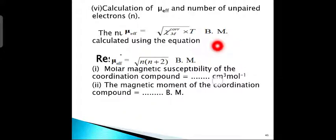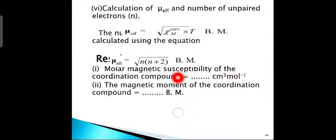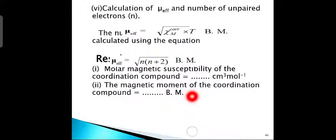Calculation of μ_eff and number of unpaired electrons N. The magnetic moment μ_eff is calculated using the equation: μ_eff = √(χ_M(corrected) × T) Bohr magnetons. The number of unpaired electrons is calculated using the formula: μ_eff = √(N(N + 2)) Bohr magnetons. The result gives the molar magnetic susceptibility of the coordination compound in cm³/mol and the magnetic moment in Bohr magnetons.